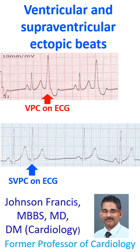Sometimes a late diastolic ventricular ectopic can occur just after the P wave. If ventricular ectopics are very frequent or occur very prematurely so as to fall on the T wave of the previous beat, they can lead on to ventricular tachycardia or fibrillation.